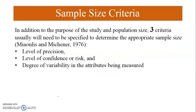As per Meolius and Michener (1976), apart from the purpose of the study and population size, there are three more criteria the researcher should pay special attention to while determining the appropriate sample size: the level of precision, the level of confidence or risk, and the degree of variability in the attributes being measured.